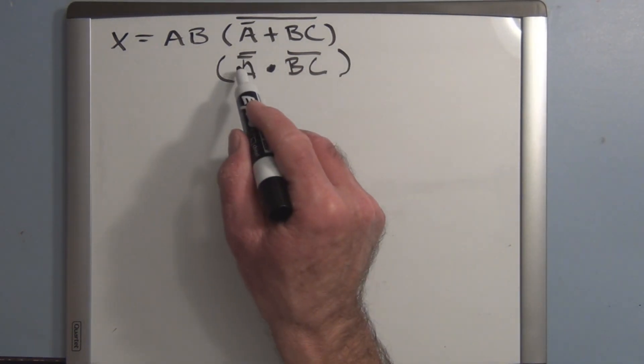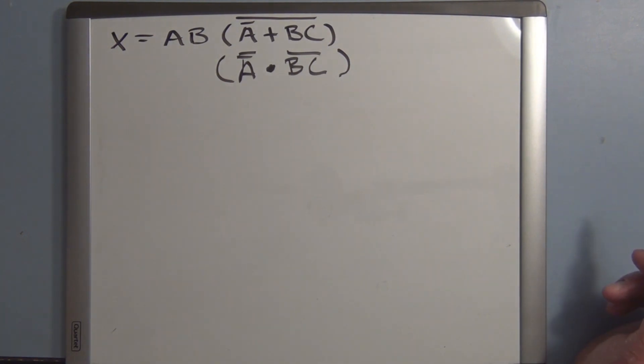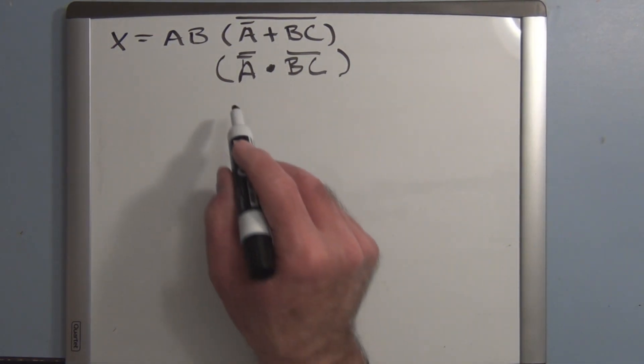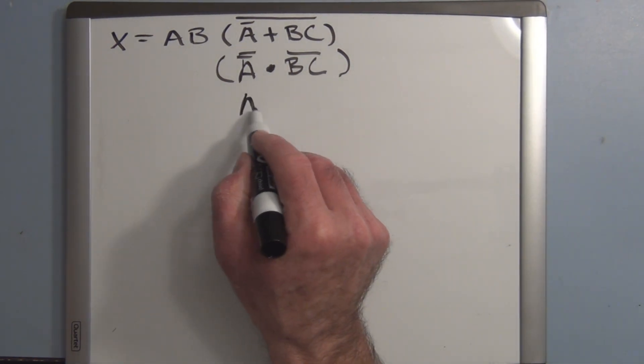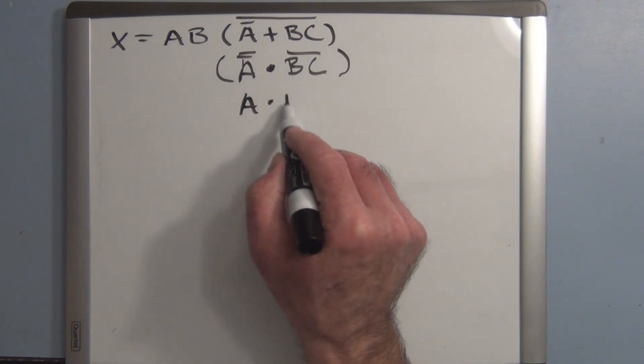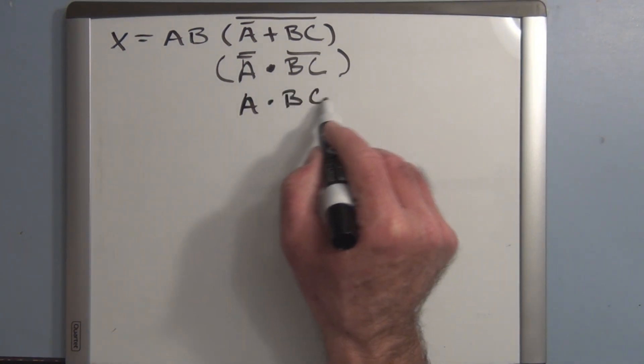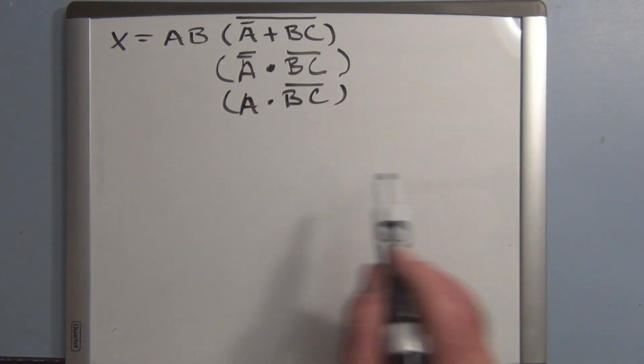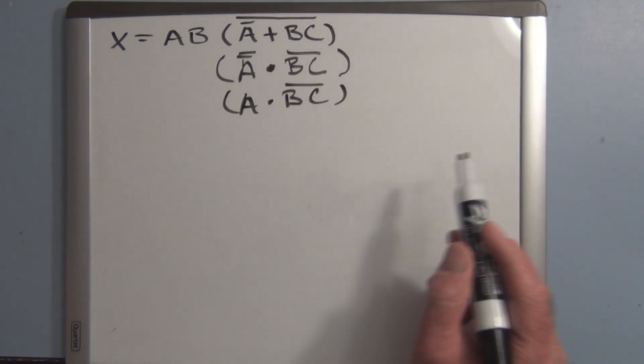So we know that a double inversion cancels. So you end up with the original term. So this becomes A and BC not.